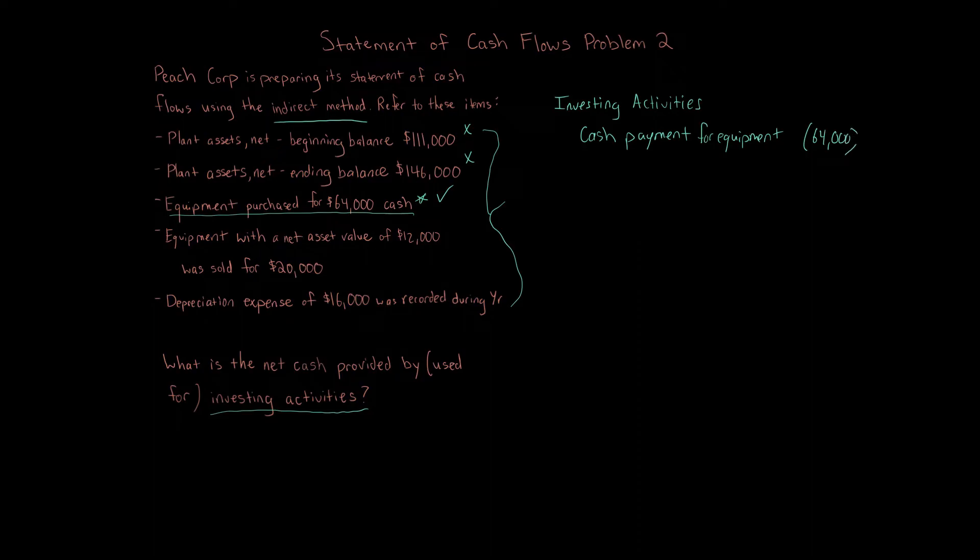We're done with that one. Next, equipment with a net asset value of $12,000 was sold for $20,000. This one will affect the Statement of Cash Flow investing activities. This one definitely will. Now, the key question though is, do we use the net asset value or do we use the amount it was sold for? Well, the key is, how much cash did you get? They got $20,000 cash.